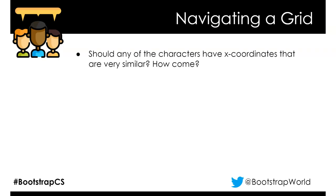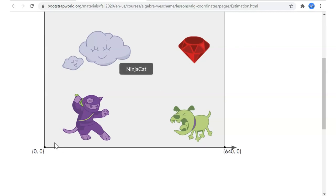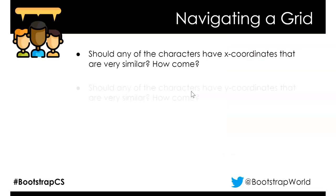Here's how I'm thinking through these — and it's really important to write down your estimates so you get firm in your thinking and commit to them, so that when you learn more you can really update your thinking. Should any characters have similar X-coordinates? X-coordinates represent how far they are from the left side. Ninja Cat is fairly similar to the cloud, and the center of the ruby and the dog are very close, so they'd have similar X-coordinates.